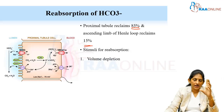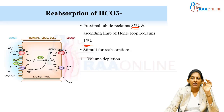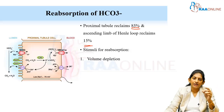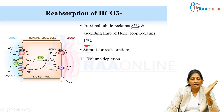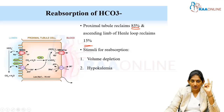In a volume-depleted state — as seen in chloride-responsive metabolic alkalosis — the body tries to reabsorb more bicarbonate in the proximal tubule. So volume depletion is a stimulus for bicarbonate reabsorption. Similarly, hypokalemia is another stimulus, as it is the opposite of hyperkalemia.